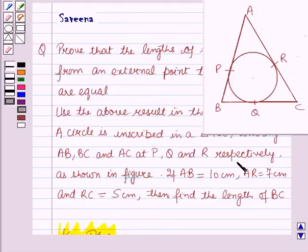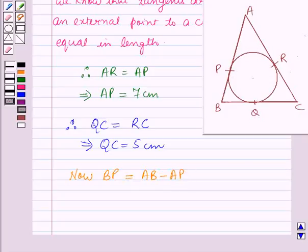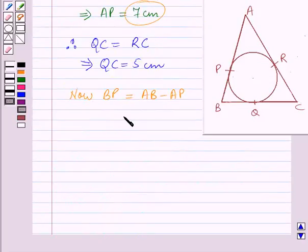Now in this question we have to find the length of BC. BP is equal to AB minus AP. AP is 7 cm and AB is 10 cm, so BP is equal to 10 cm minus 7 cm, which is equal to 3 cm.